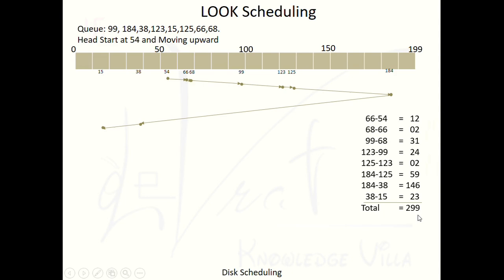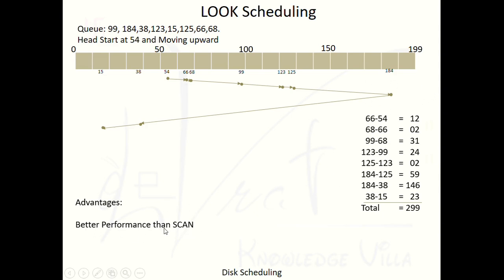Now let's discuss the advantages and disadvantages of LOOK scheduling. The first advantage is better performance than SCAN. In SCAN scheduling the total seek time was 329 units, whereas here we reduced it by 30 units — it depends on the data, but we are able to reduce the total seek time. Another advantage is that it performs better under less load, similar to the lift and rickshaw examples we discussed.